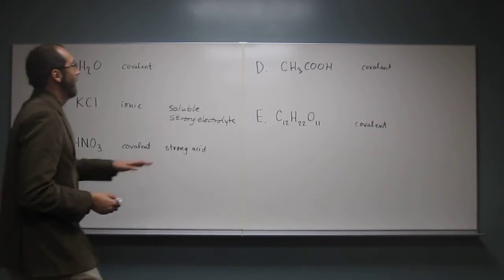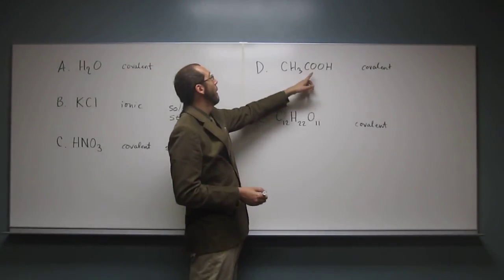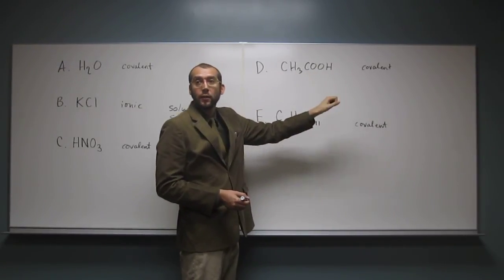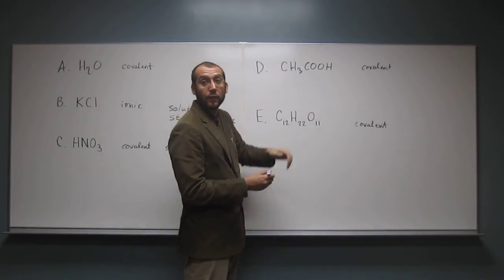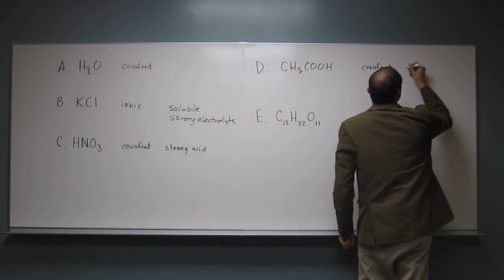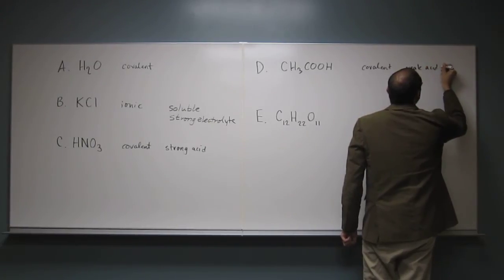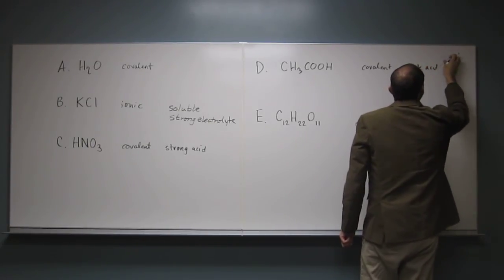So do you see a weak acid up there? CH3C. Yeah, so this thing up here, remember, whenever you see that COOH or CO2H, that means it's a weak acid. A carboxylic acid. So those are always weak acids.